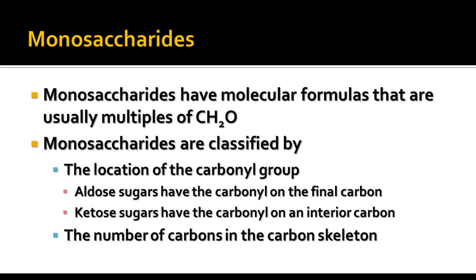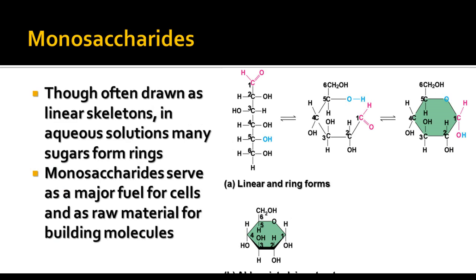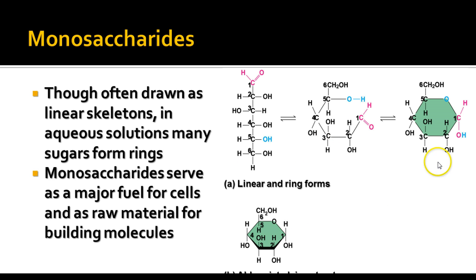Let's look at what these look like. The aldoses have the carbonyl on the final carbon. The ketoses have the carbonyl on an interior one. The -ose part means that it is a monosaccharide or a disaccharide. Oftentimes we draw these as linear skeletons, but when you put them in an aqueous solution, that linear structure forms a ring structure. So you'll see both linear forms and ring forms when we're talking about monosaccharides and disaccharides.